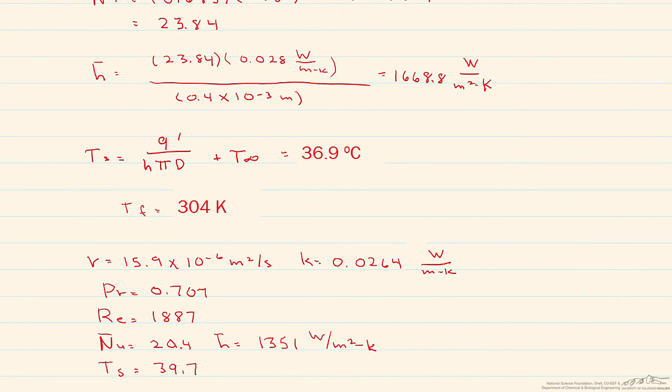So using the properties at 36.9 degrees C gives us the surface temperature very close to where we guessed. In the next screencast, we're going to look at the Zoukowskis correlation, which is very similar to this one, but slightly more comprehensive.